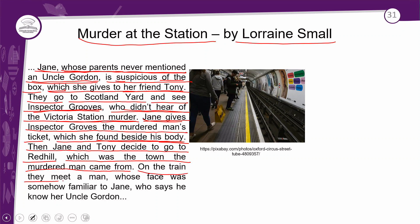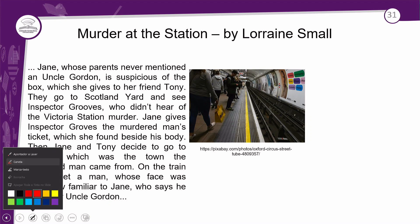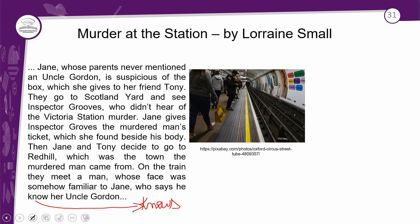'On the train, they meet a man whose face was somehow familiar to Jane.' So on the train they meet a man — whose, which here indicates possession — cujo rosto, the face, was somehow familiar to Jane. He says — 'who says he knows her uncle Gordon.' So they meet a man who says he knows her Uncle Gordon. That's the reading of the text.